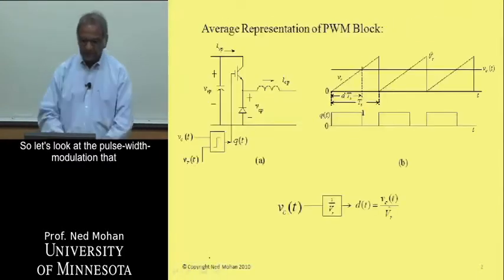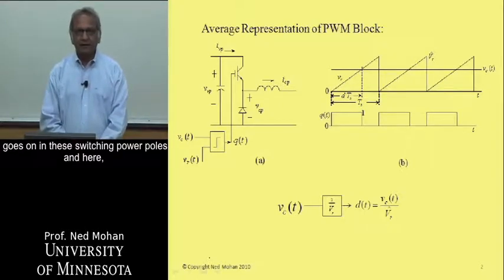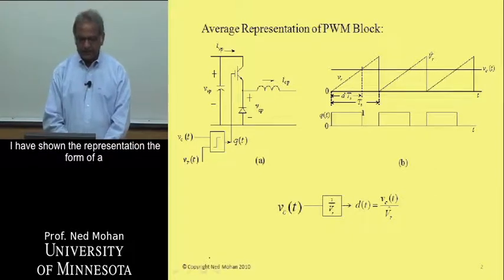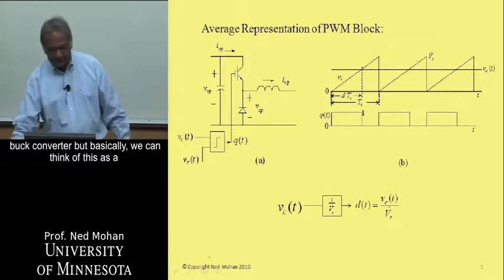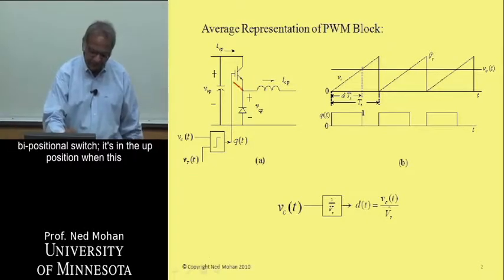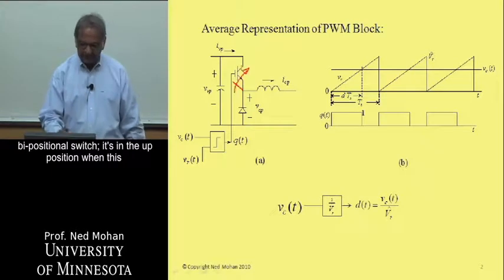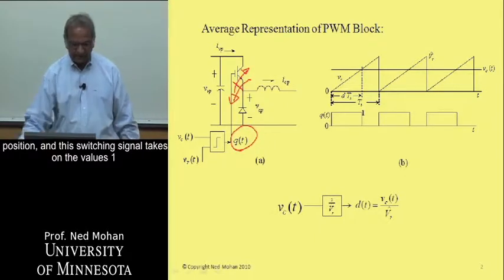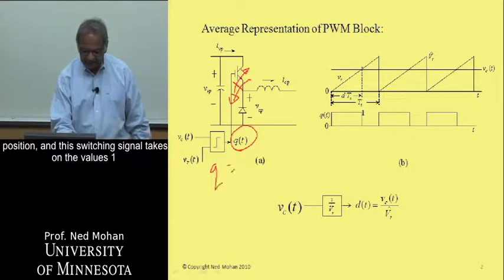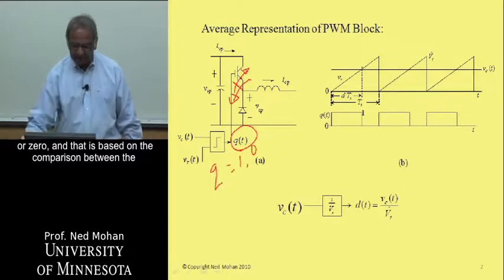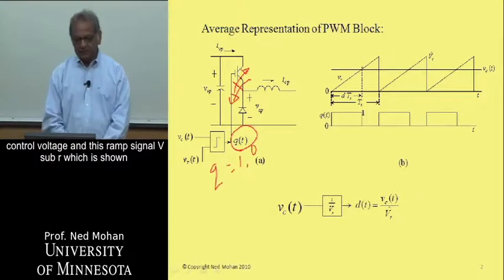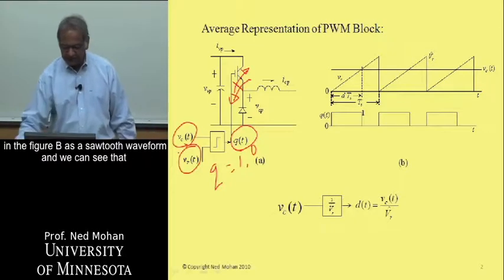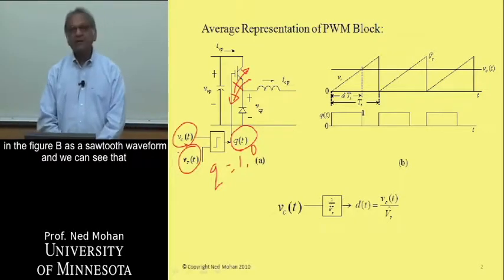Let's look at the pulse width modulation that goes on in these switching power poles. Here I have shown the representation in the form of a buck converter, but basically we can think of this as a bi-positional switch. It's in the up position when the switching signal is 1, otherwise in the down position. This switching signal takes on the values 1 or 0, based on the comparison between the control voltage and the ramp signal V_R, shown as a sawtooth waveform.